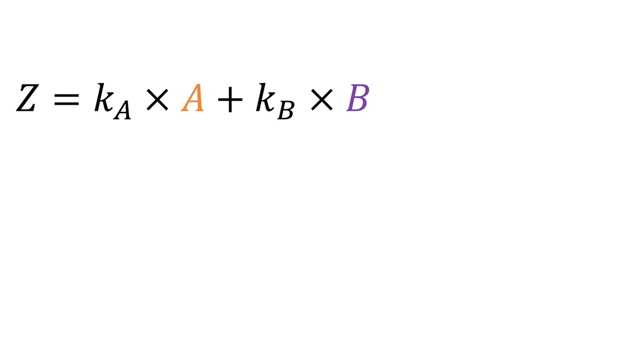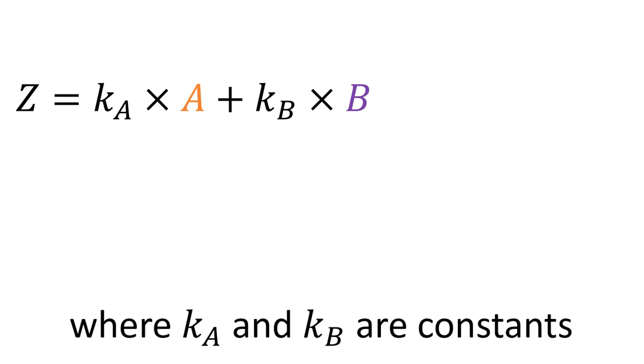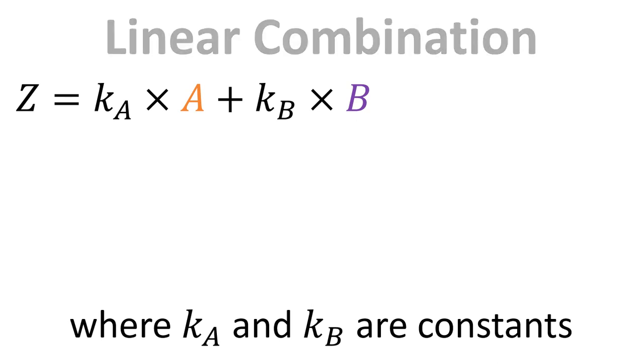So this time we need to use a slightly different equation where we have these constants. We've got K subscript A and K subscript B, which are the constants that get used to multiply up A and B. And again this is a linear combination, but it's involving these extra multipliers.